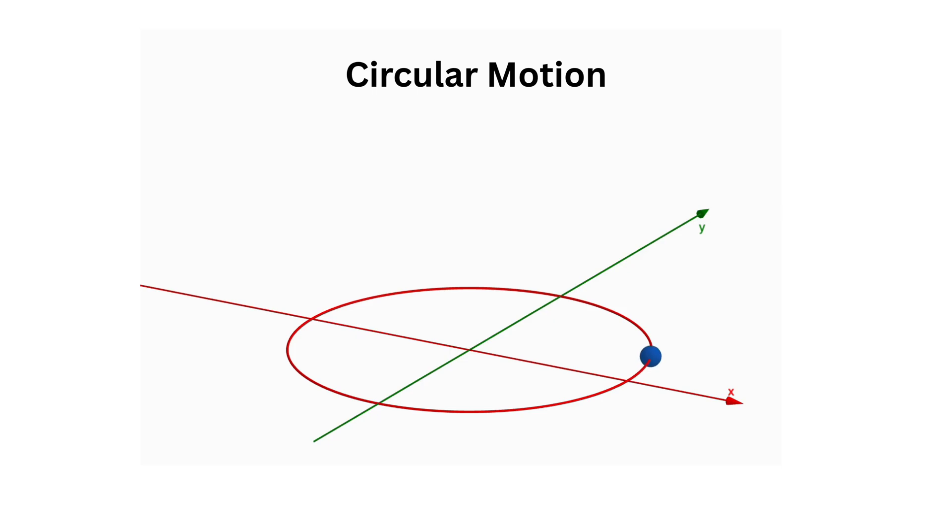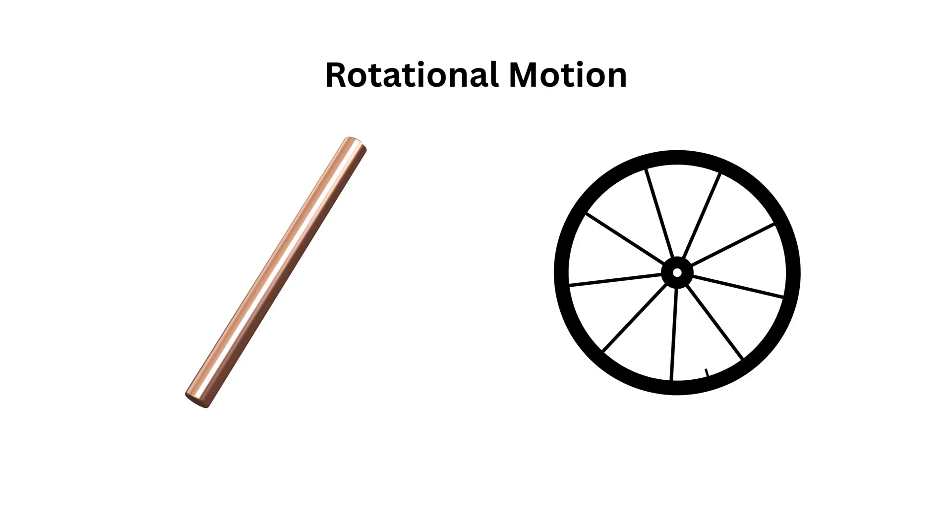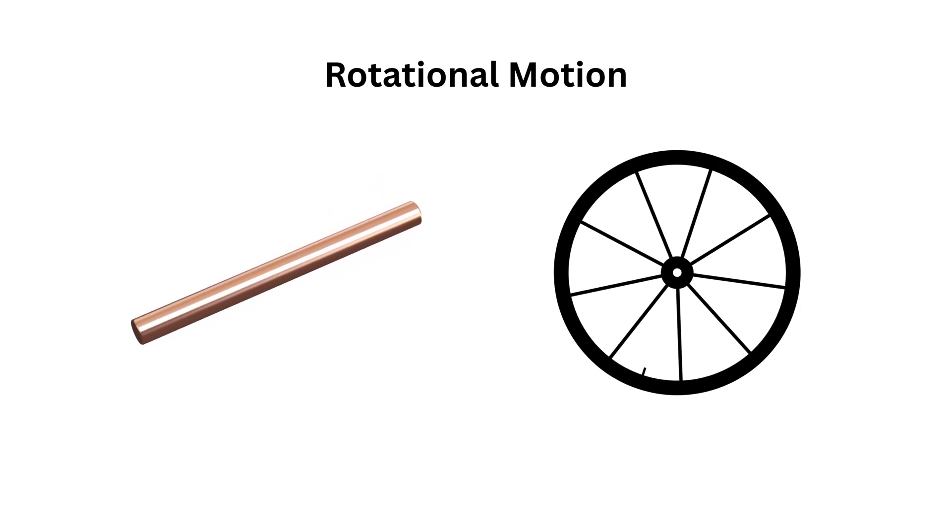While circular motion focuses on a point mass moving along a fixed circular path, rotational motion deals with extended bodies, like rods, discs, or wheels, rotating about a fixed axis of rotation.